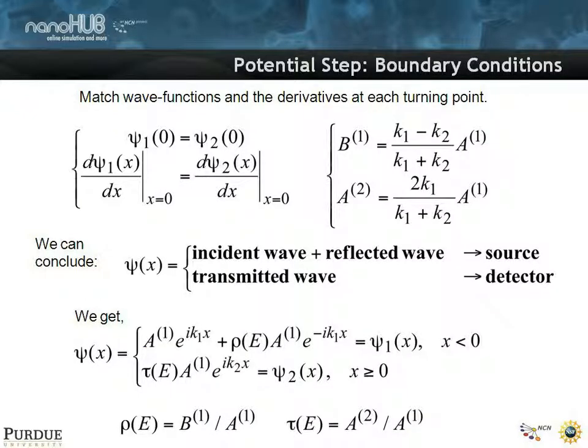You do the same kind of math and figure out that the wave function is matched at the interface, and that the differential is matched at the interface. You start to associate an incident and a reflected wave with a source, and a transmitted wave with a transmitter. You can start to compute a reflection coefficient, which is the ratio of reflected wave over incident wave, and a transmission coefficient, which is the transmitted wave over the incident wave.